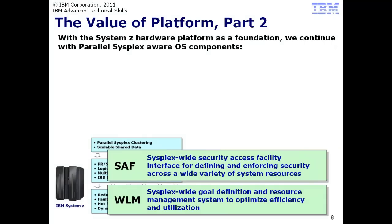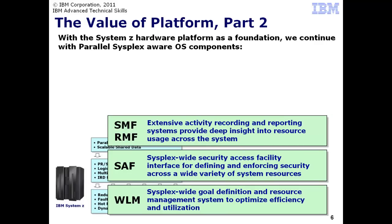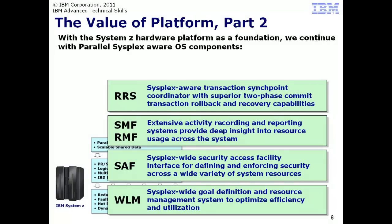SAF, or Security Access Facility, is an extremely robust security definition and enforcement mechanism that has proven itself across decades of use. SMF and RMF are activity recording and analysis tools that give you a deep insight into the operations of the system and programs running on the system. They provide the tools needed for accurate capacity planning and usage accounting purposes. RRS, or Resource Recovery Services, is a SysPlex-wide transaction sync point coordinator function exploited by all major data subsystems on ZOS, including WAS for ZOS.